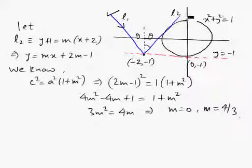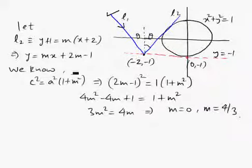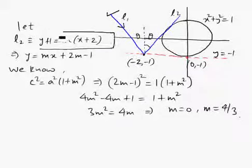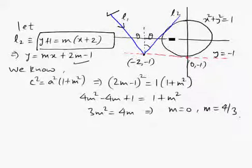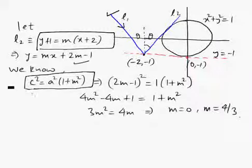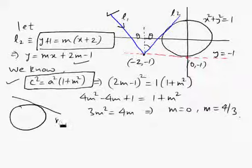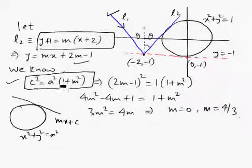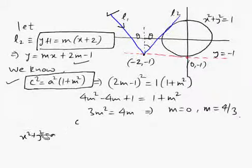We can begin by finding the slope of the reflected ray. The reflected ray passes through (-2, -1) with slope m, so using slope-point form we can write its equation. Since the reflected ray touches the circle, we apply the condition of tangency: if line y equals mx plus c touches the circle x² + y² = a², then c² equals a² times (1 + m²).